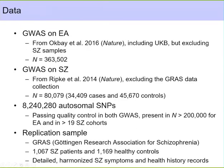The data we use are the GWAS results from education attainment in our Nature paper, taking the discovery cohorts and meta-analyzing with the replication cohort, the UK Biobank, having excluded all samples that contributed to the 2014 schizophrenia GWAS so we have two non-overlapping samples. For schizophrenia, we take the 2014 results plus the GWAS Data Collection as our replication sample. The GWAS Data Collection is one of the few samples with highly detailed, harmonized schizophrenia symptoms and health history records. We work with roughly 8 million autosomal SNPs passing quality control in both GWAS analyses.